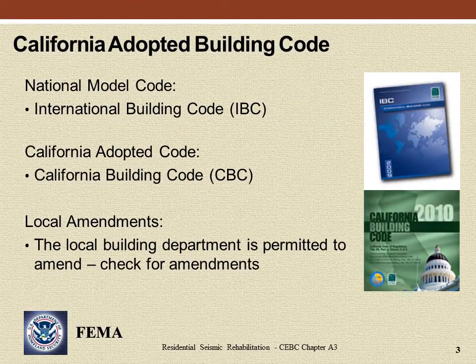Persons offering design or construction services for seismic rehabilitation need to be aware of which building codes and additions are adopted by the local jurisdiction and which amendments, if any, have been made by the codes. California adopts and amends the International Building Code (IBC) to create the California Building Code (CBC). Amendments to this code may be adopted at the local city or county level, and these amendments could affect seismic rehabilitation work.